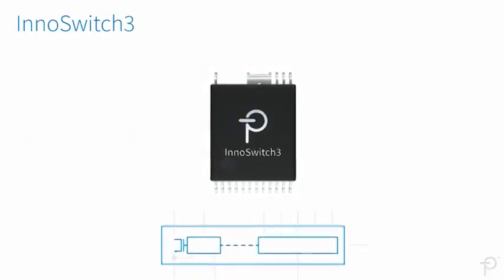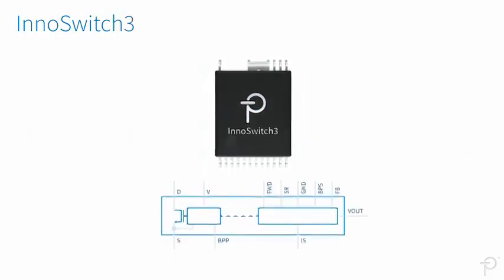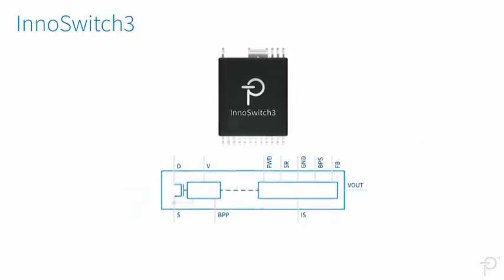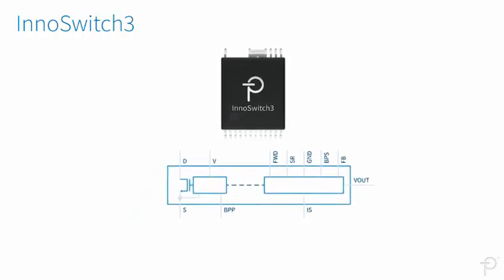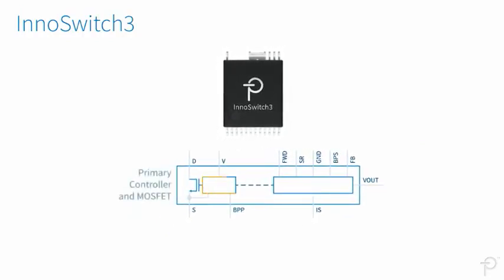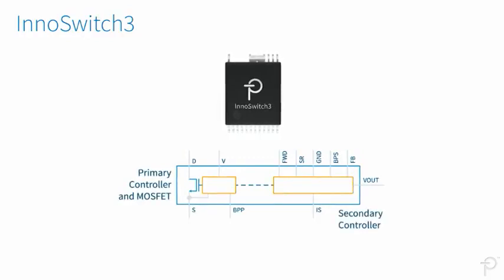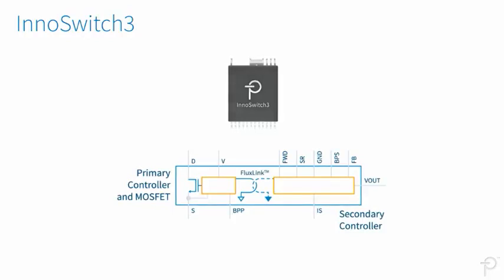The revolutionary design of the InnoSwitch 3 family is ideal for safe and reliable synchronous rectification. InnoSwitch 3 ICs combine primary and secondary controllers that communicate via a safe feedback mechanism called FlexLink.